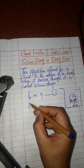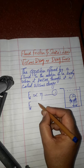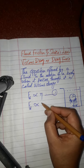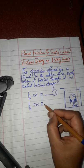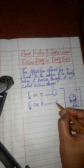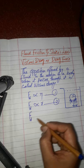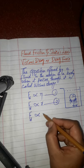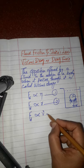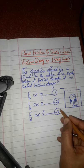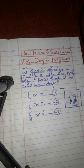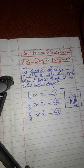Number two, drag force is directly proportional to the size of the body — meaning the radius of the body, since we have considered a spherical body for simplicity. Number three, viscous drag is directly proportional to the relative velocity of the body — not just the velocity of the body, but the velocity of the body with respect to the fluid. If the fluid and body move in opposite directions, relative velocity is greater; in the same direction, relative velocity is less.